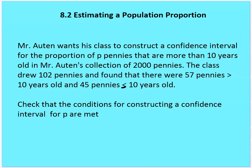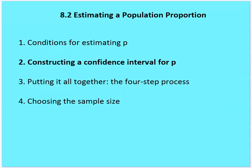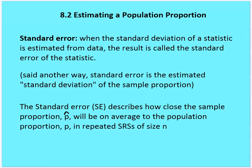Now for the second objective — we want to construct a confidence interval for P. Let's talk about standard error. Standard error is when the standard deviation of a statistic is estimated from data; that result is called the standard error of the statistic. The standard error is the estimated standard deviation of the sample proportion, and it describes how close the sample proportion will be on average to the population proportion in repeated random samples of size n.